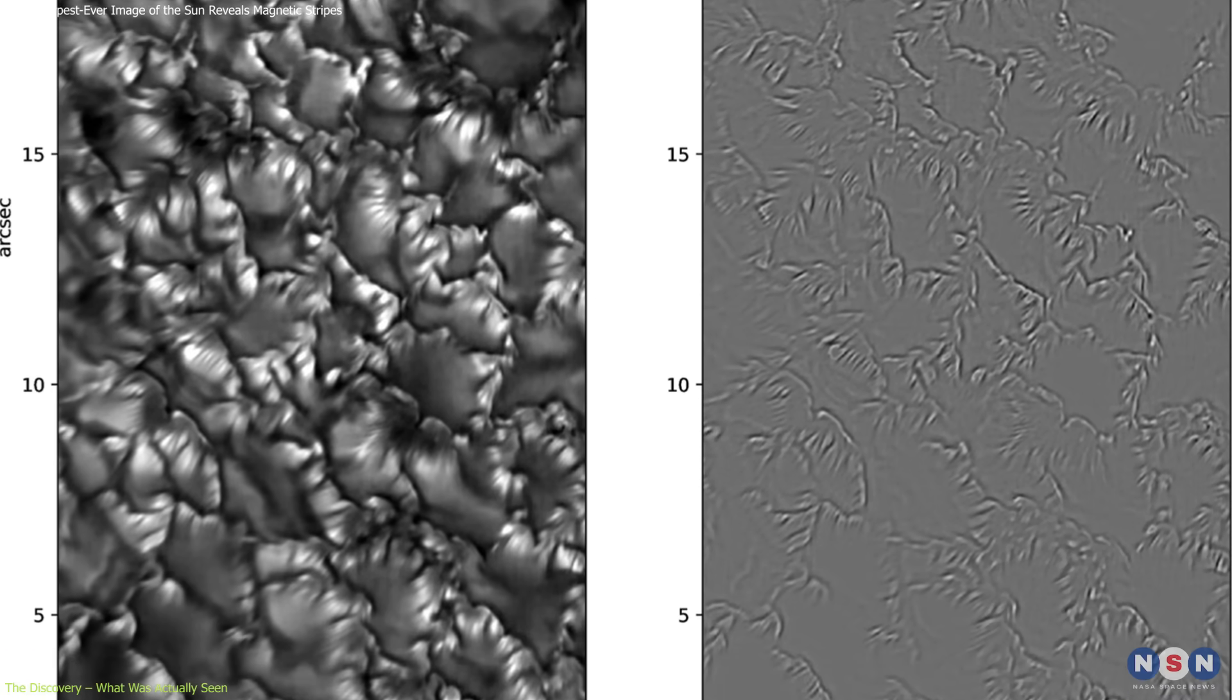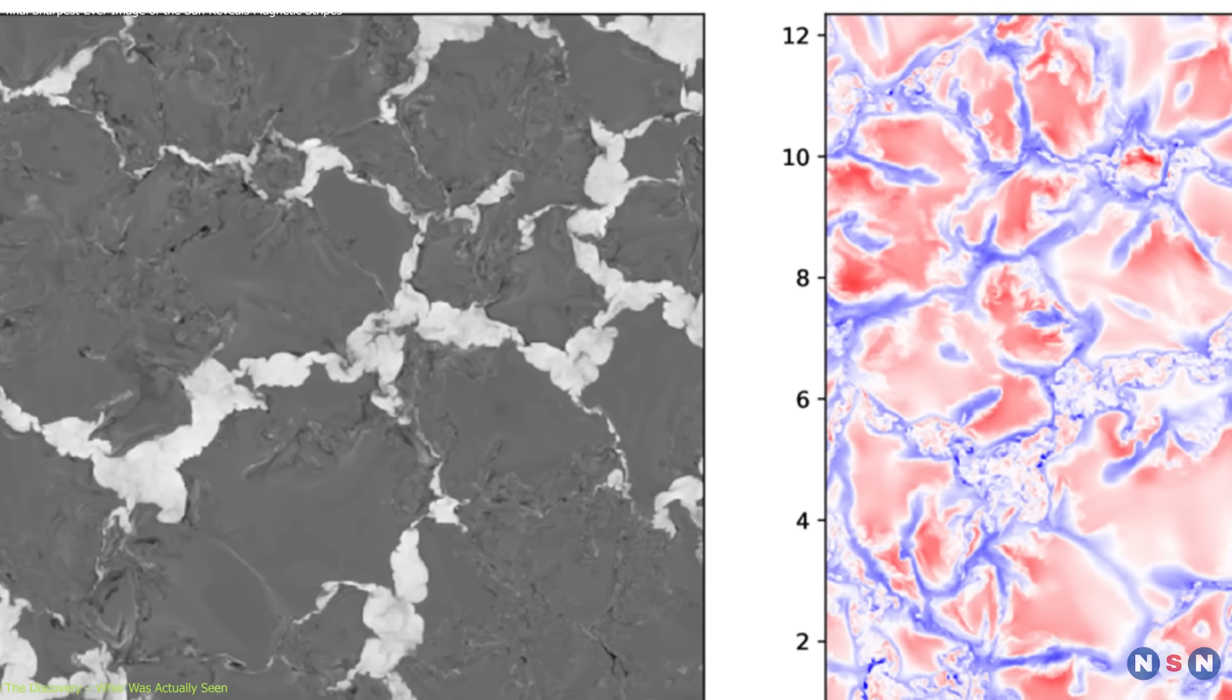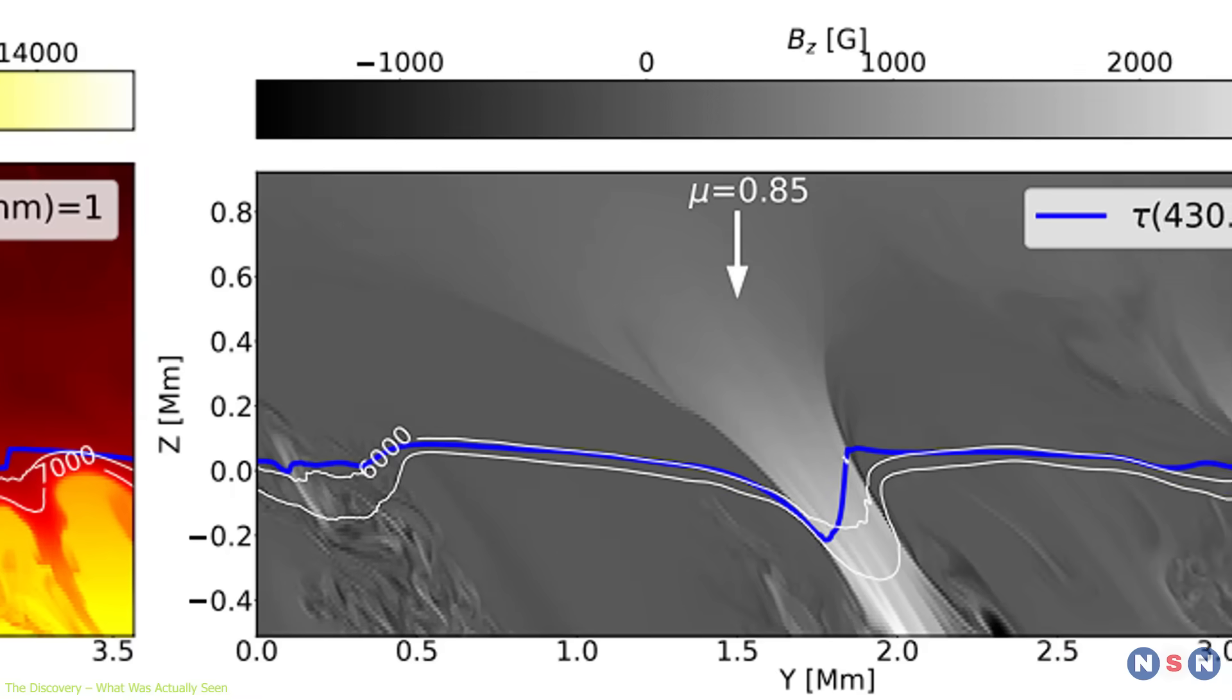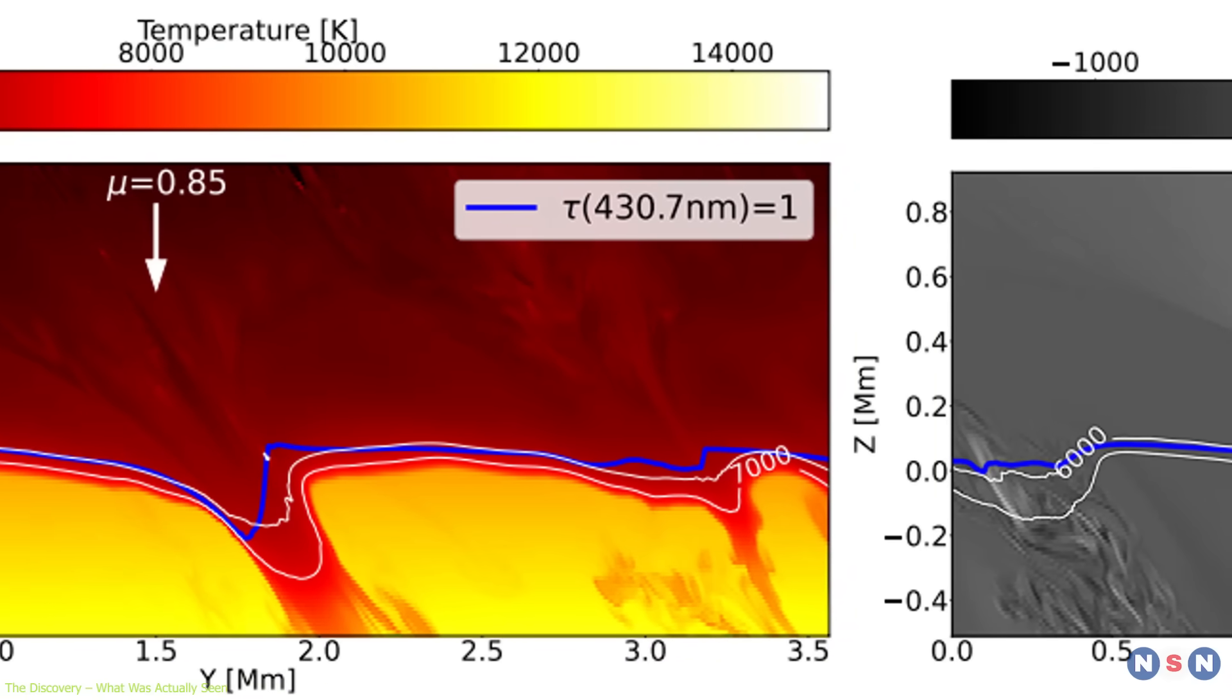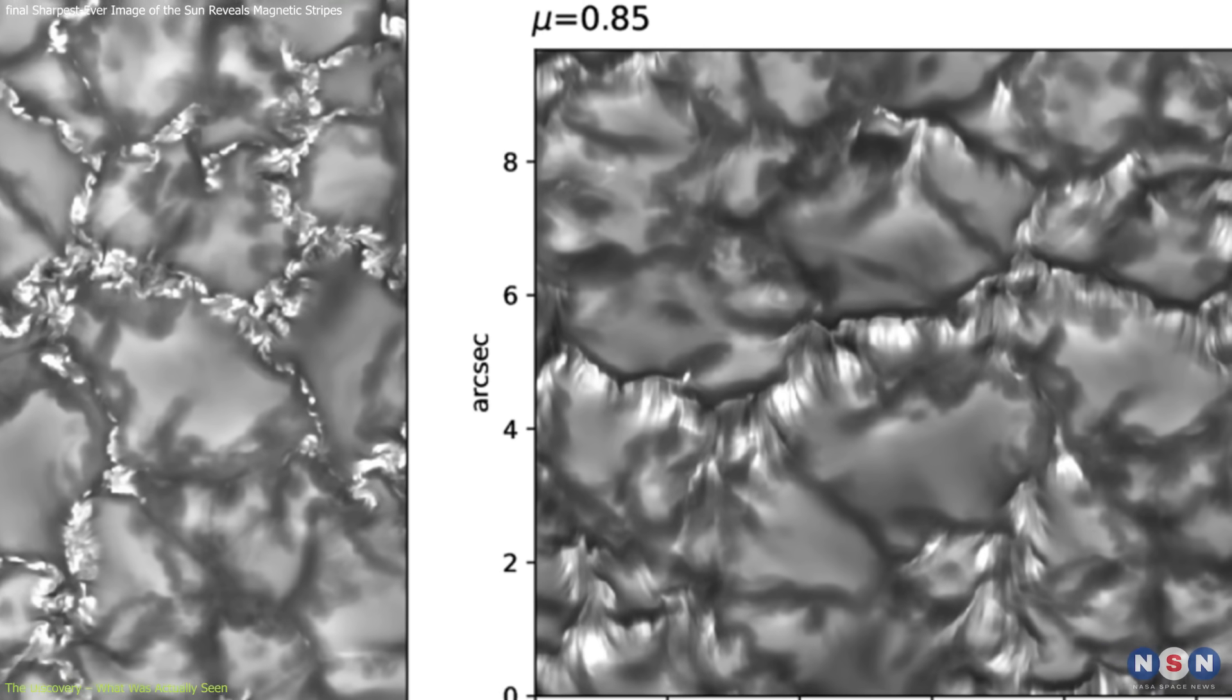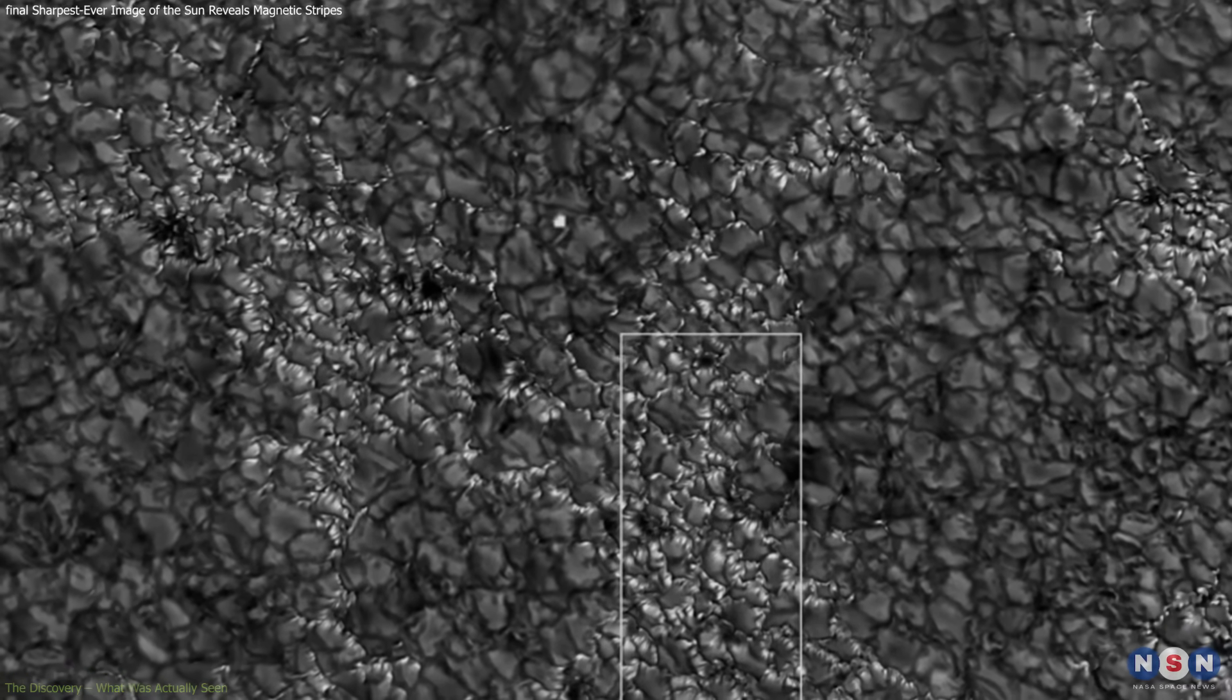To confirm the finding wasn't an observational artifact, the team compared their images to state-of-the-art magnetohydrodynamic simulations of the solar surface. These physics-based models had independently predicted similar striated structures. The match between simulated and observed imagery was striking, confirming that these were indeed real magnetic features, not processing noise or instrument error.